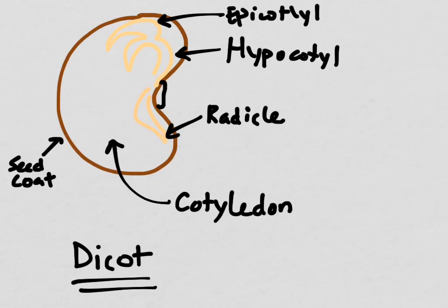This type of plant is called a dicot. Remember that here, I've only drawn half of the bean. The other half might have been opened up and thrown away somewhere, but we have two cotyledons, one on the left and one on the right.